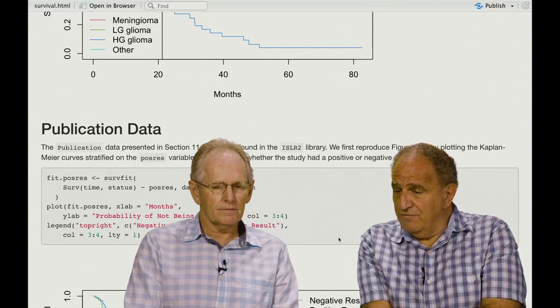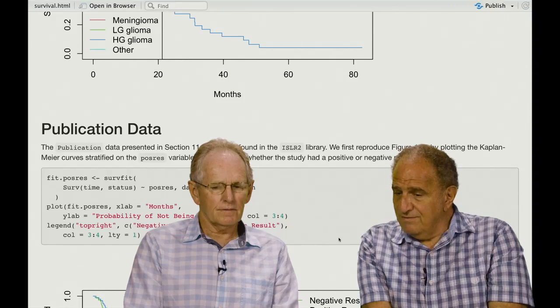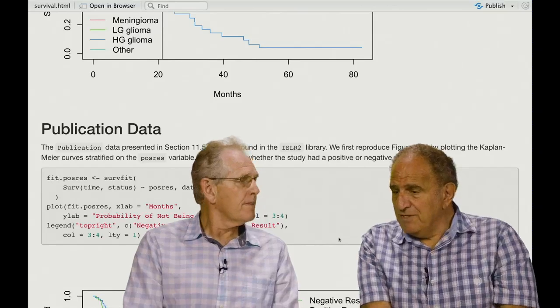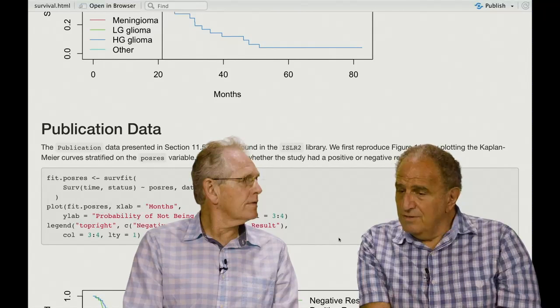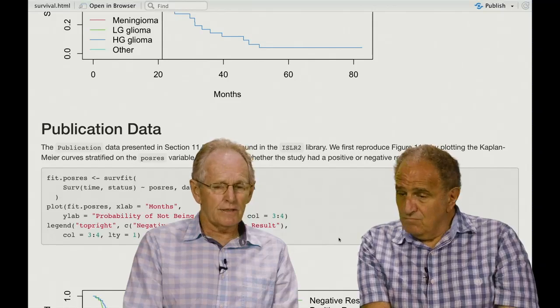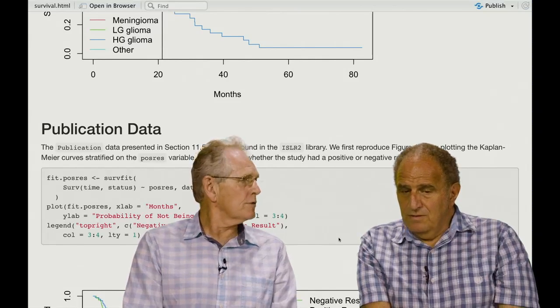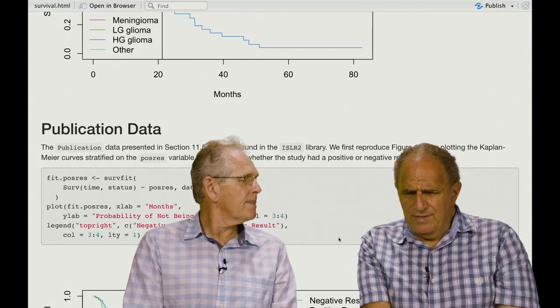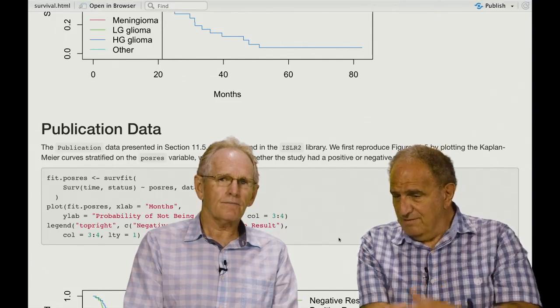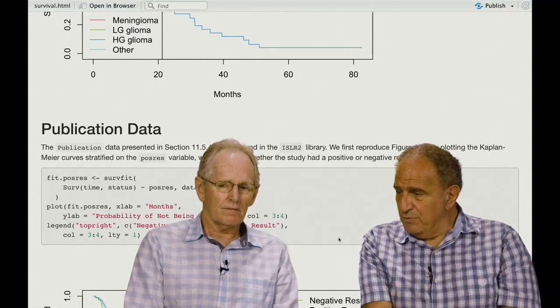whether that led to a faster publication. One might think that's the case, or publication at all. The time until publication was linked to positivity of the trial. And so censoring, if the time is censored, it means it never was published. Or I think maybe the study ended before the publication. At the end of the data collection, the paper was still unpublished.